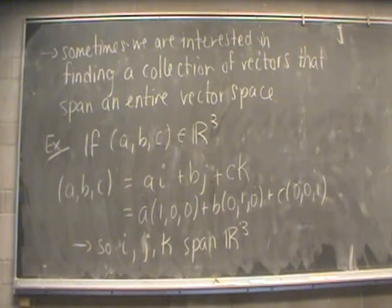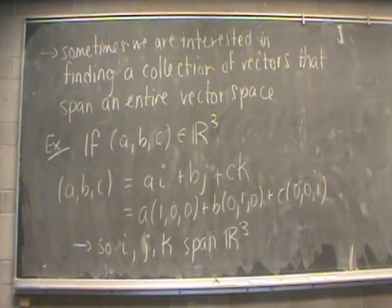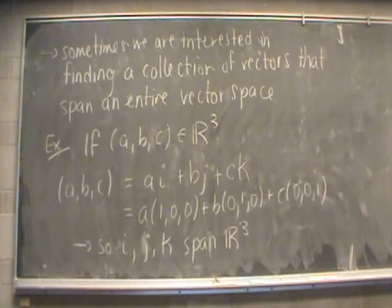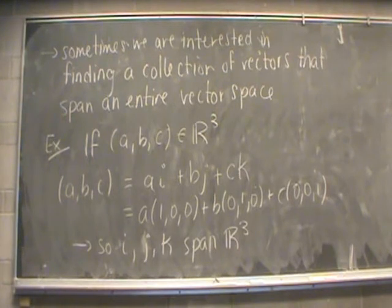Spans play a pretty important role in vector space theory. Usually what we want to do is see whether a collection of vectors spans an entire vector space — that is, if we start creating linear combinations of a small collection, do we recreate the entire space? For example, any vector in R3 can be broken down as a linear combination of i, j, and k. So we say that {i, j, k} spans all of R3; they capture all of the information of R3.